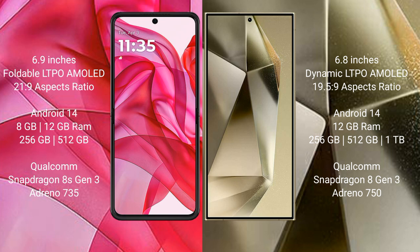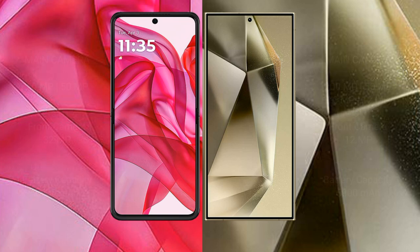Samsung Galaxy S24 Ultra comes with 12GB RAM and 256GB, 512GB, or 1TB internal storage, powered by a Snapdragon 8 Gen 3 processor with Adreno 735 GPU.